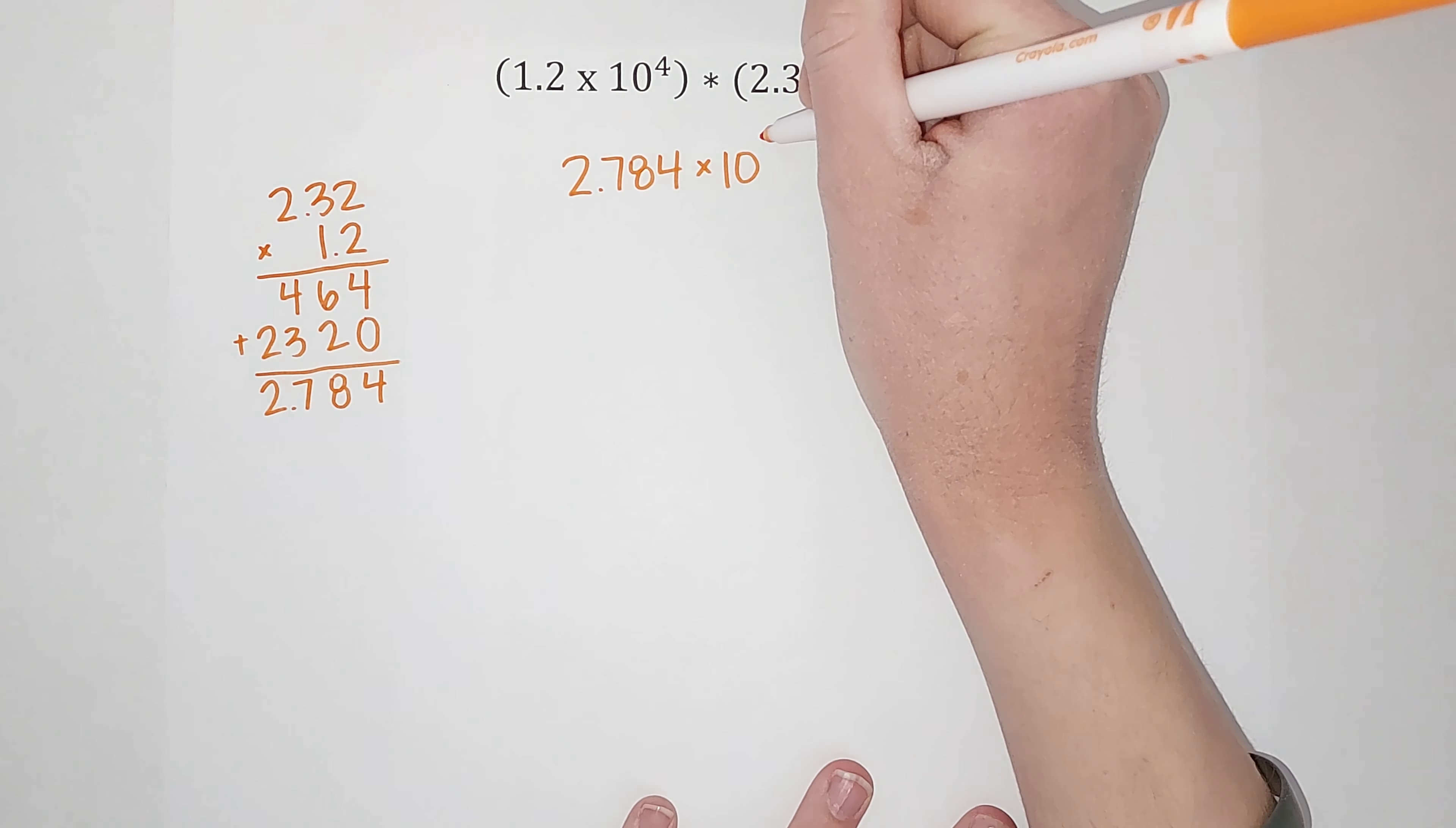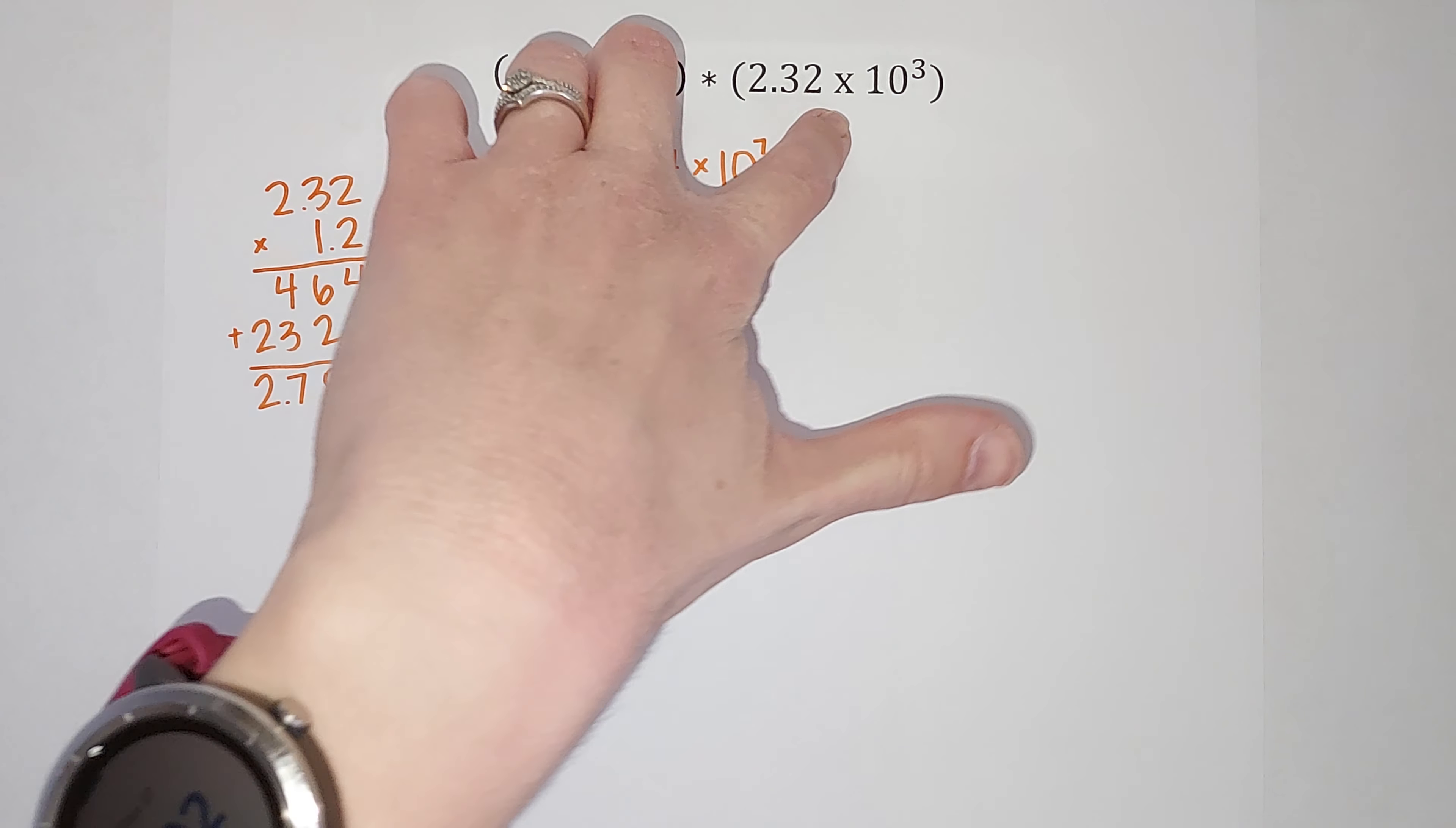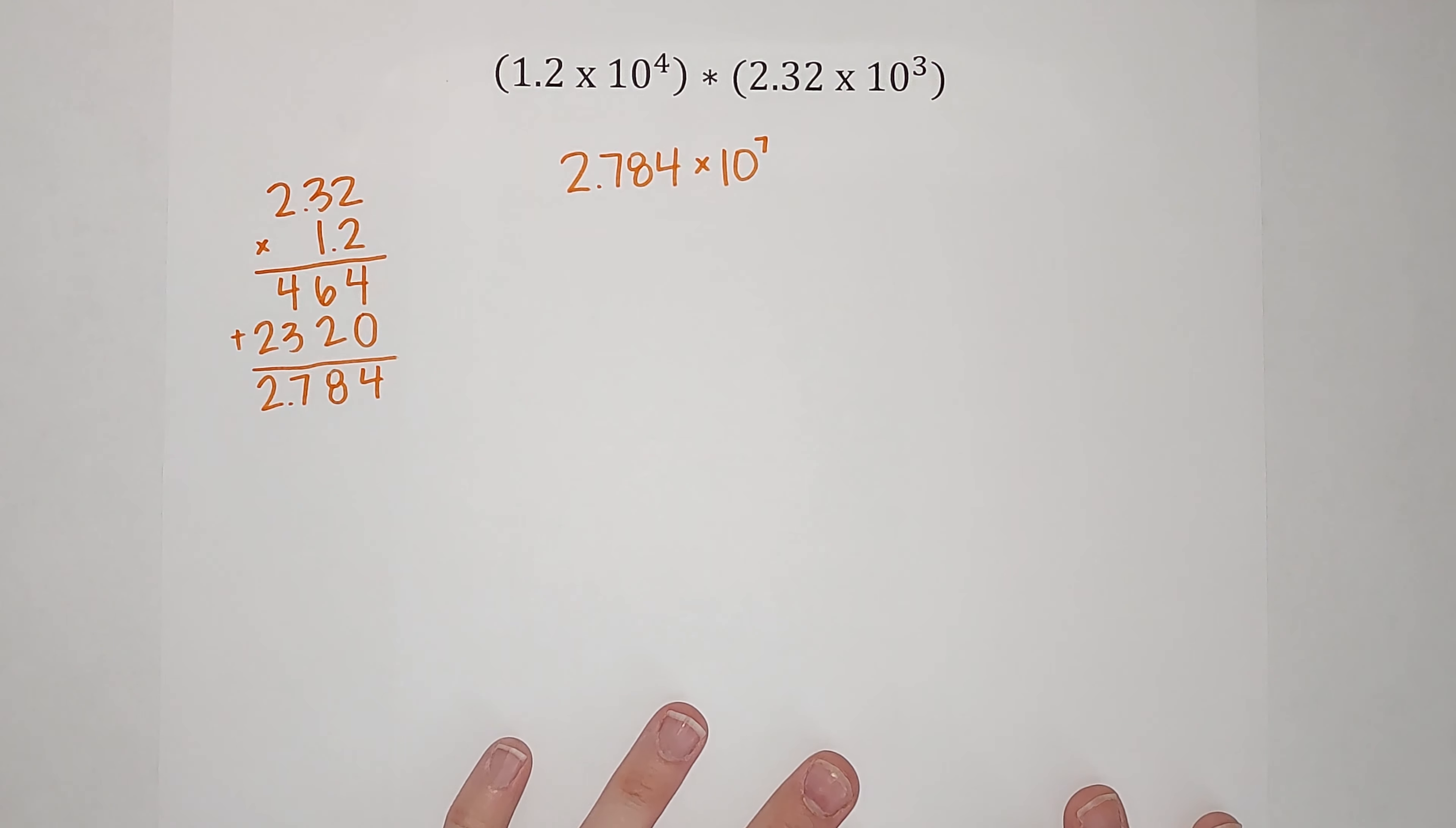So when I take this big number and multiply it by this big number in scientific notation, I end up with 2.784 times ten to the seventh power. Hopefully that made sense. If it did help you, if you can hit the like button I would appreciate it. Thanks, bye!